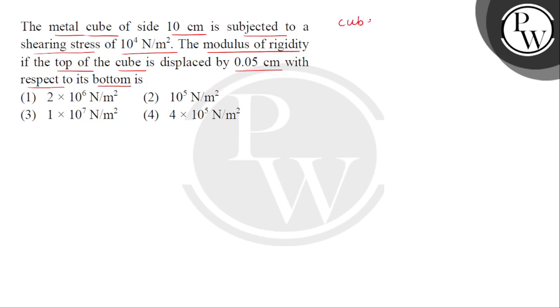we have a metal cube which is an elastic body. Each side measures 10 cm. Converting it into meters, we get 10⁻¹ meter for each side of the cube.